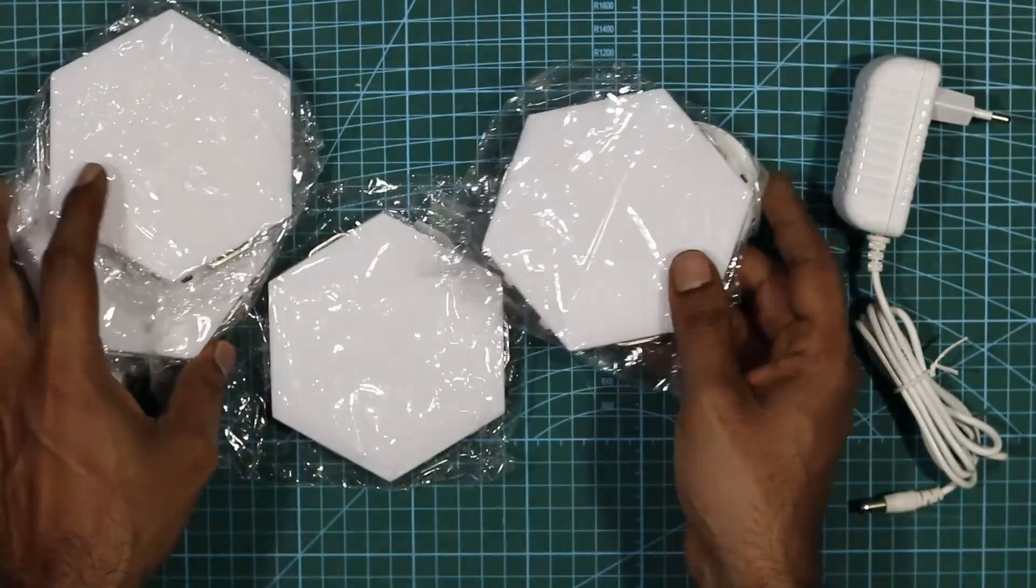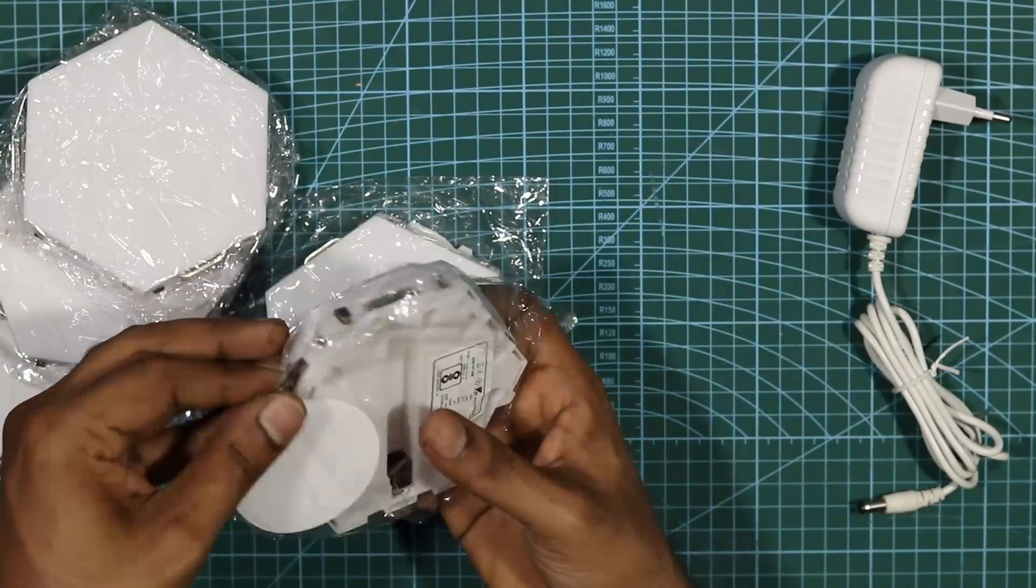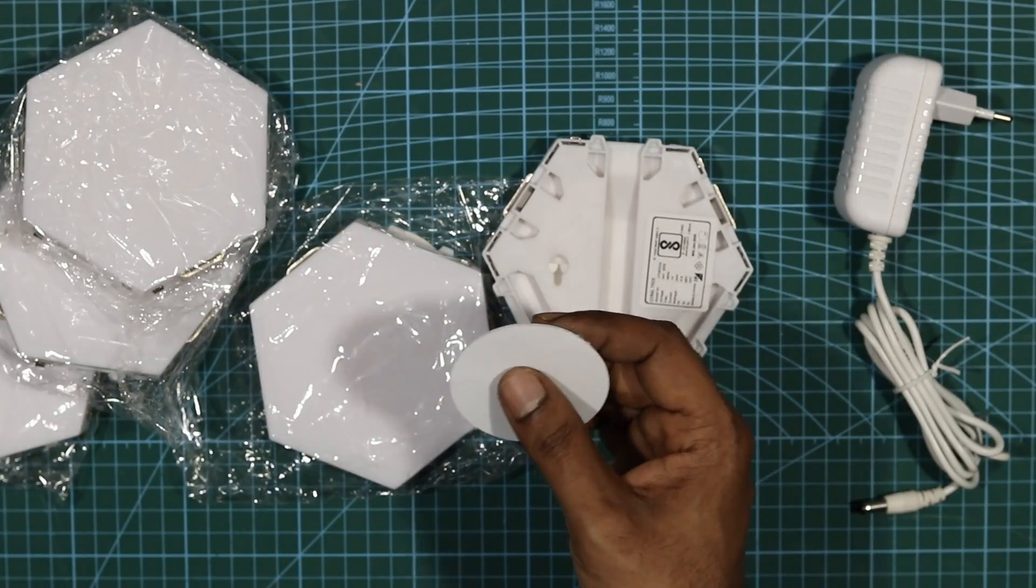These are the modules that glow up and these get connected using magnets to each other. You don't need special wiring as such. You just need to place it together.